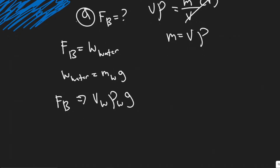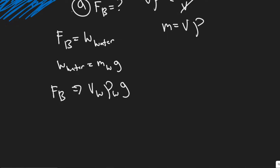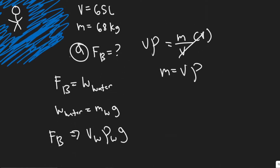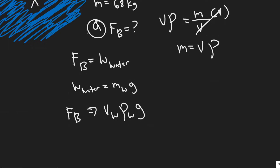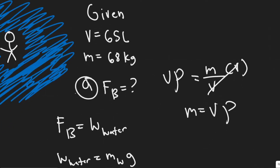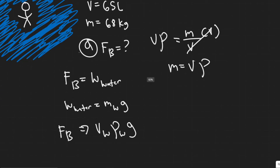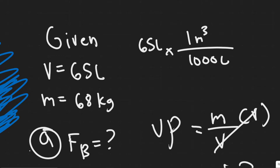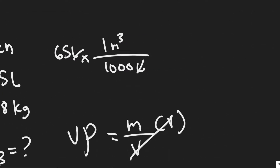We need to find all these values. We know g is just the acceleration due to gravity — that's a constant — and the density of water is a constant too. Then we need the volume of the diver, but we must make sure we have it in the right units. The volume can't be in liters; it has to be in meters cubed. One meter cubed equals 1000 liters, so you just divide by 1000. So 65 divided by 1000 equals 0.065 meters cubed.